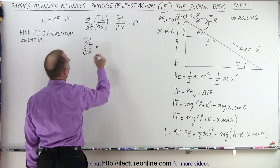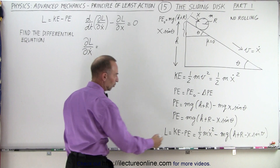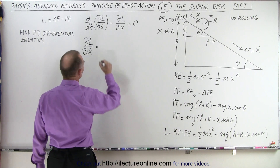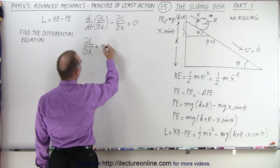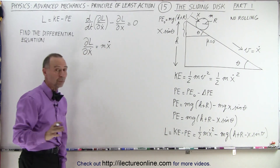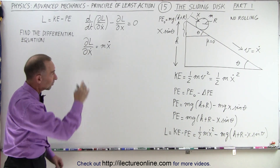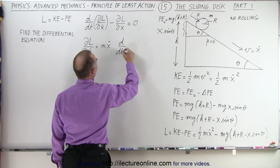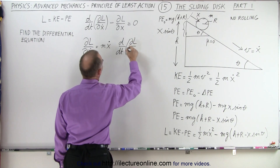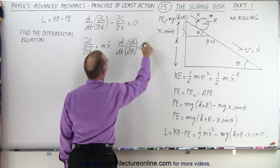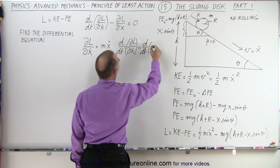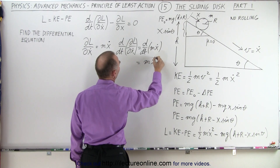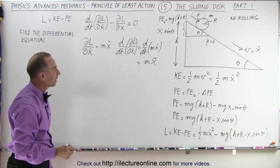The partial of L with respect to x-dot: the only term containing x-dot gives us 2 times one-half, which is 1, so the result is m times x-dot. That partial derivative represents the momentum along the incline. Then taking the time derivative — d/dt of the partial of L with respect to x-dot — equals d/dt of mx-dot, which gives m times x-double-dot, the acceleration along the incline.